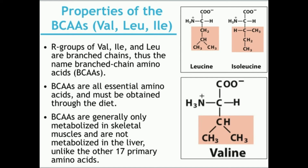What's notable about BCAAs is that they are a major metabolic source of energy in skeletal muscle and not the liver. All other 17 amino acids are degraded mostly in the liver, but BCAAs are actually degraded in skeletal muscle. Additionally, leucine, isoleucine, and valine — but especially leucine — strongly stimulate protein synthesis, which is important for resistance training. Leucine in particular, but all of the BCAAs, strongly stimulate muscle protein synthesis directly after a bout of resistance training.